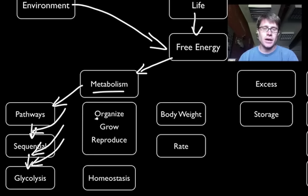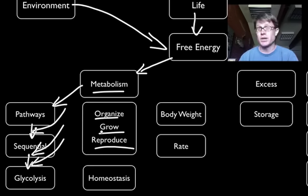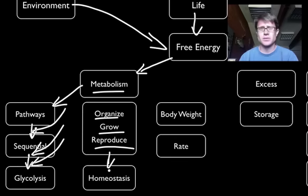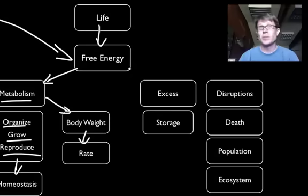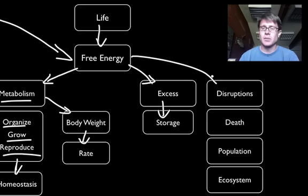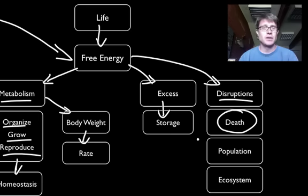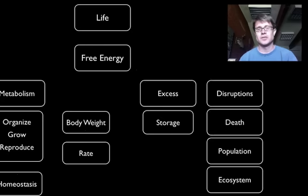Next I'm going to talk specifically about how we organize, grow, and reproduce — the three major things we get from free energy. To do this we must maintain homeostasis, an internal environment that remains stable. There's also an interesting relationship between metabolism rate and body weight. And if we have disruptions to free energy in an individual, that can lead to death, or changes in a population or even an ecosystem.